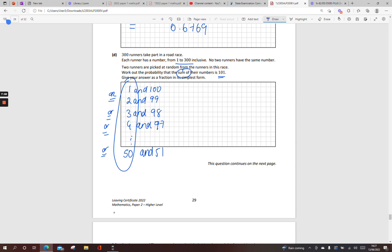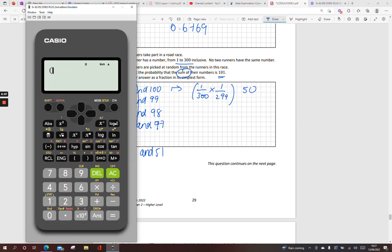Because if I go any further, it'll be 51 and 50, which is the same thing. So realistically, there's 50 combinations here. Or 50 times this will occur. So if I just work out the probability of one of these. So the probability of 1 is 1 out of 300. And multiply. Say the number 100 is 1 out of 299. You could add them all up. Or I could simply times that there by 50. 1 over 1794.